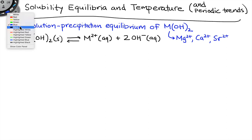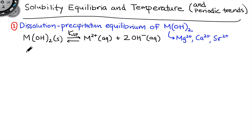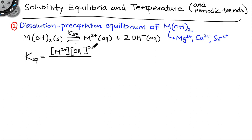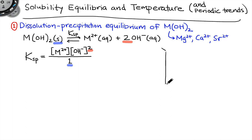The equilibrium constant for this process is KSP, or the solubility product constant. KSP has the form of any equilibrium constant — product concentrations divided by reactant concentrations at equilibrium. But interestingly, because the reactants are purely solid, there is no concentration term in the denominator; there's a 1 there because of the solid metal hydroxide on the left-hand side. Note also the 2 in the exponent for hydroxide because of the 2 in the balanced chemical equation. That squared term is going to become important as we do calculations with KSP.